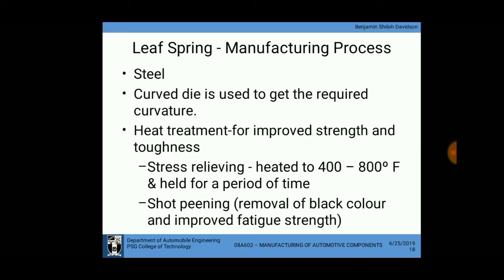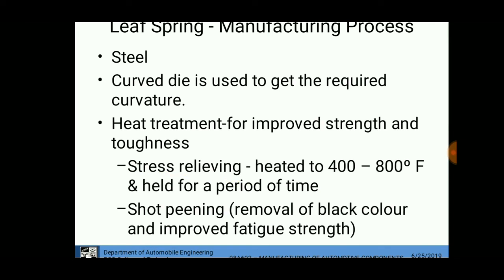The leaf spring is made of steel that is made to flow in a curved die to get the correct curvature. Heat treatments are applied to retain or increase material properties. Stress relieving is used for relieving stresses, and the material is heated to 400 to 800 degrees Fahrenheit. Shot peening is used to remove the black surface color and induce compressive strength.